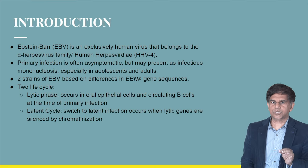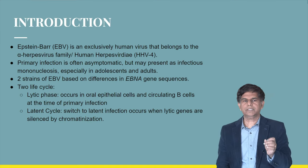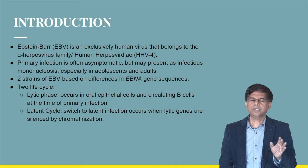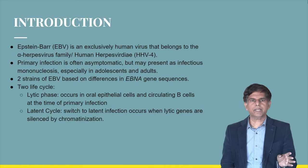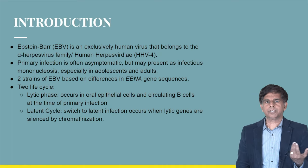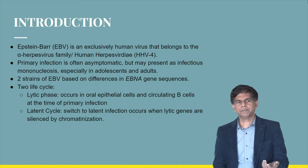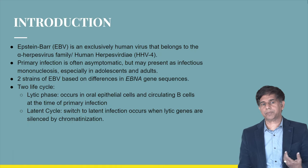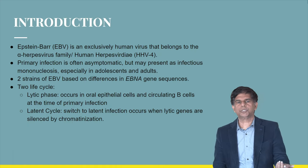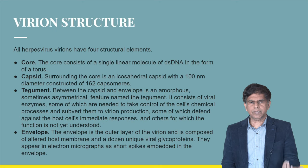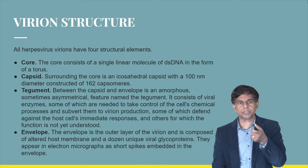Today's presentation is about Epstein-Barr virus, or HHV-4. It belongs to the human herpesvirus family. It can sometimes be asymptomatic, especially in adolescents and adults. There are two strains based on the EBNA gene sequence. There are two life cycles: a lytic phase and a latent cycle. The lytic phase occurs in oral epithelial cells and circulating B cells at the time of primary infection. In the latent cycle, a switch to latent infection occurs when lytic genes are silenced by chromatinization.